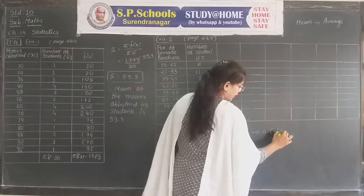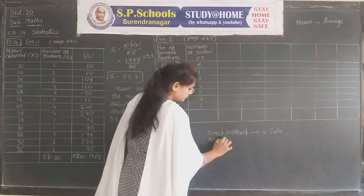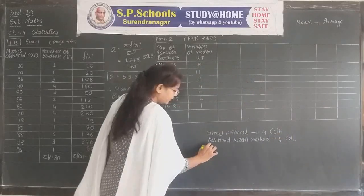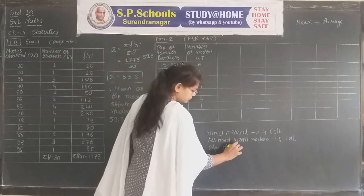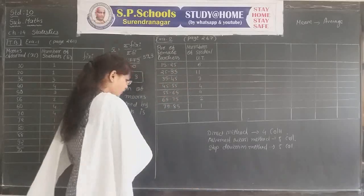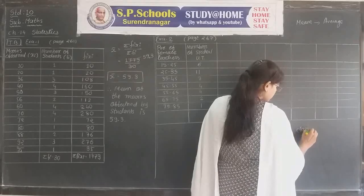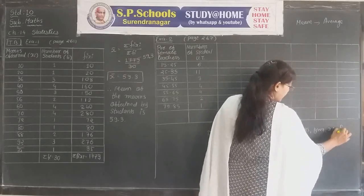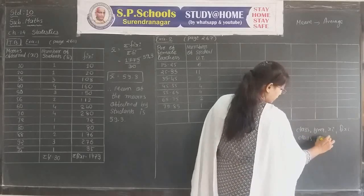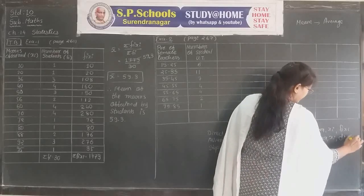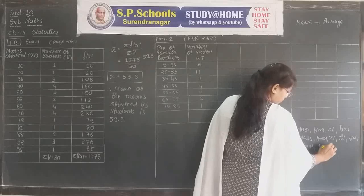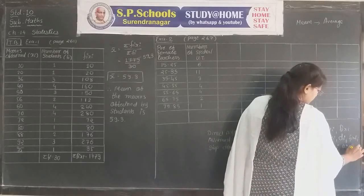For the direct method, four columns are required. For the assumed mean method, five columns are required. For the step deviation method, five columns are also required. In the direct method the four columns are: class, frequency, xi, and f·xi. In the assumed mean method: class, frequency, xi, di, and f·di. In the step deviation method: class, frequency, xi, ui, and fi·ui.